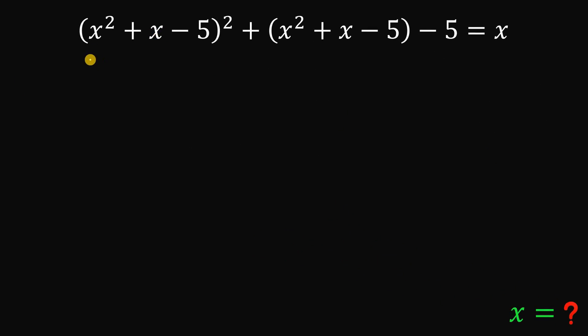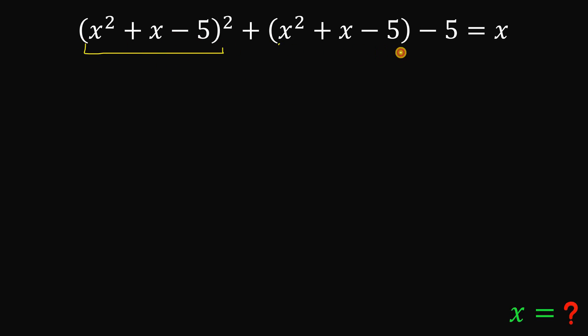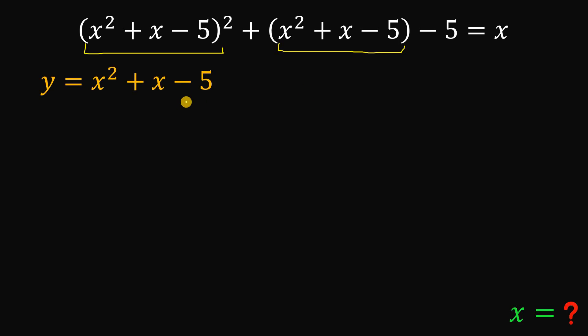Alright, so given this equation, the goal is to find all possible values of x that satisfy it — it can be a real number or a complex number. So let's begin. First, we see a common term of x squared plus x minus 5, so what we're going to do is let this expression equal another variable and call it y.